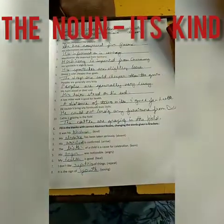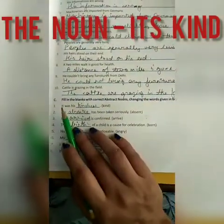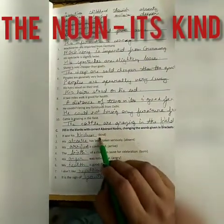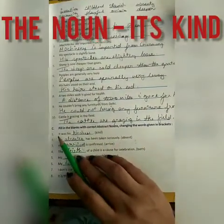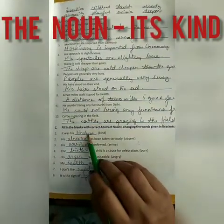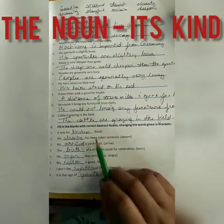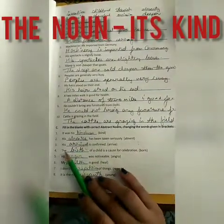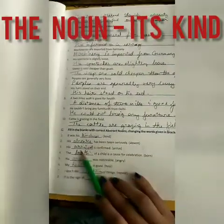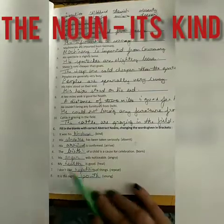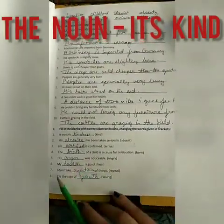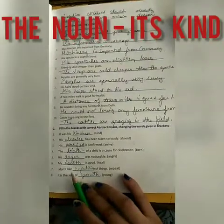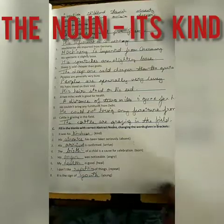Then 'Cattle is grazing in the field.' Correction: 'The cattle are grazing in the field.' Then come to the C part — fill in the blanks with the correct abstract noun, changing the word given in brackets. Yeh hamein bracket mein jo words diye hue hai, unko abstract noun mein correct karna hai. Number 1: 'What was his kindness?' — kind ka ho gaya kindness. 'His absence has been taken seriously.' — absent ka absentee. 'His arrival is confirmed.' — arrive, arrival. 'The birth of a child is a cause of celebration.' — born, birth. 'His anger was noticeable.' — angry, anger. 'My health is good.' — heal, health. 'I don't like repetition of things.' — repeat, repetition. 'It is a sign of youth.' — young, youth.